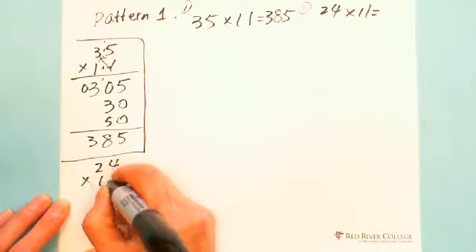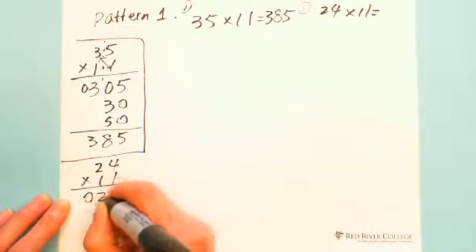Then you have 24 multiplied by 11. You see 24. 24 multiplied by 11. You got 0, 2, 0, 4, 0, 2, 0, 4, 4, 6, 2. You got 264.